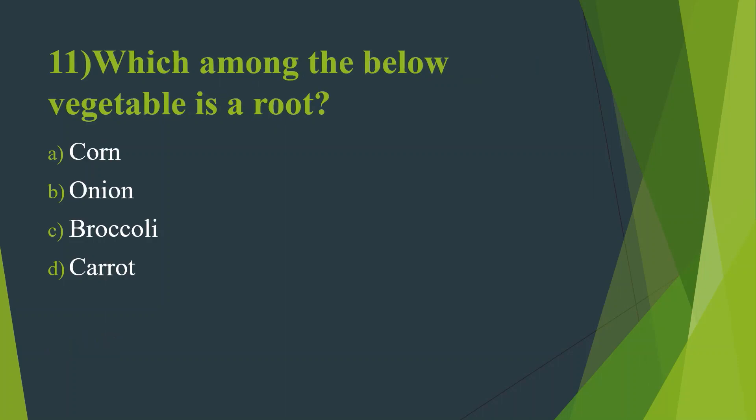Eleventh question: Which among the below vegetables is a root? Option A, Corn. Option B, Onion. Option C, Broccoli. Option D, Carrot. Answer is Option D, Carrot.